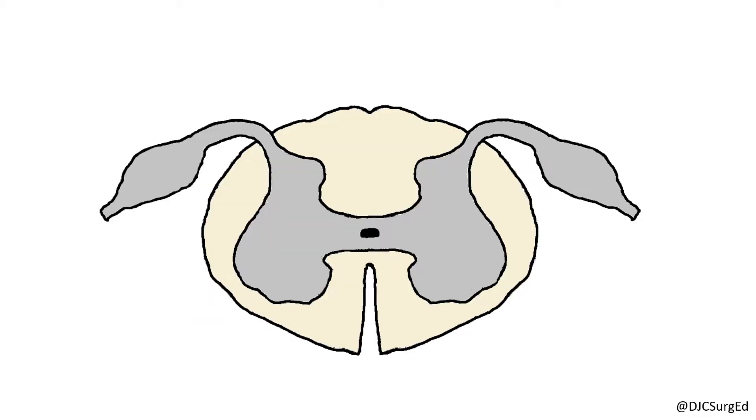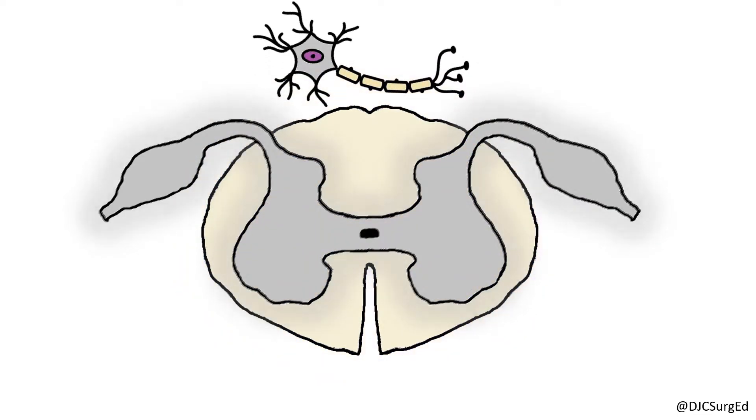The spinal cord consists of two well-defined areas: an outer white matter comprised of axons and an inner gray matter consisting of neuron cell bodies.